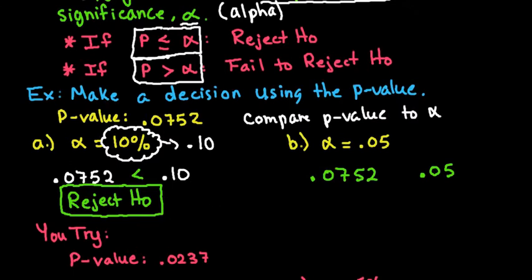We're going to take the 0.0752 and we're going to compare it to our alpha level. On this one we have that 0.0752 is greater than 0.05. So since it's greater than we fail to reject. It's above the threshold of what we would consider to be unusual. So in this case we would fail to reject.